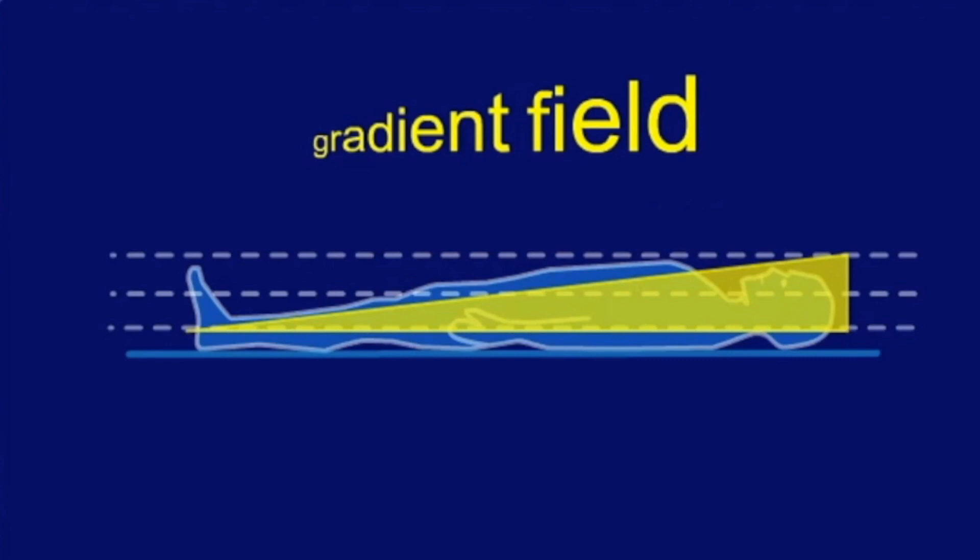This gradient field modifies the strength of the original magnetic field. In this example, magnetic field strength increases for different cross-sections from the feet towards the head.